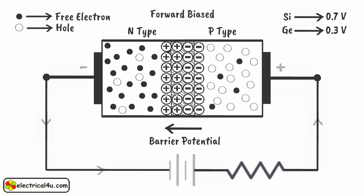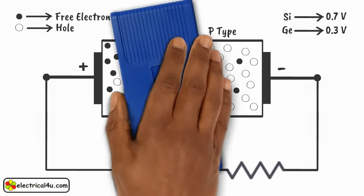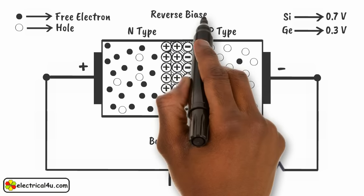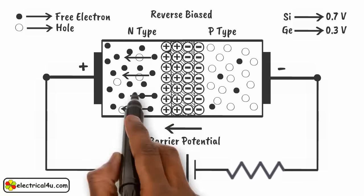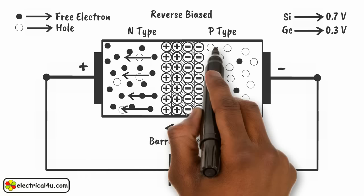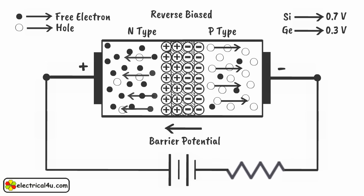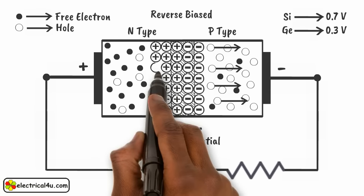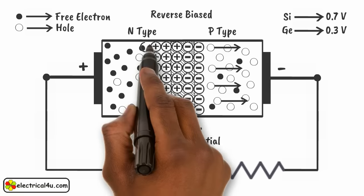Now we connect the negative terminal of the voltage source to the link connected to the P-type side, and the positive terminal to the link connected to the N-type side. In this condition, the diode is said to be in reverse biased condition. Due to attraction of positive potential, the free electrons in the N-type region go away from the junction. Due to attraction of negative potential, the holes in the P-type region go away from the junction. This makes the depletion layer of the junction wider with increasing reverse bias voltage.